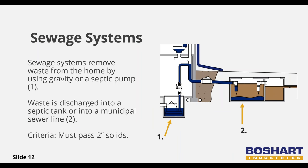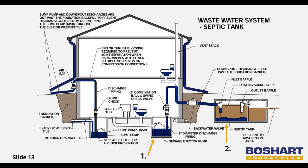Sewage systems can run by gravity, or if more practical, a sewage ejector pump will be needed to remove waste. The sewage ejector pump (arrow one) will eject waste to a septic tank or municipal sewer line (arrow two). Sewage check valves are often required for basements where sewage must be pumped up to a discharge line, and all sewage valves are required to handle a minimum of two inches for solid waste.